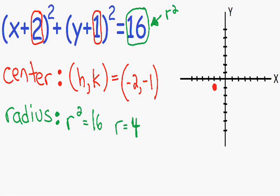The easiest points to plot are directly right, left, up, and down from the center, because you just need to count. I'll count 4 units to the right of the center — 1, 2, 3, 4 — here's one point. Then 4 units to the left — 1, 2, 3, 4 — another point. Then 4 units up — 1, 2, 3, 4 — and 4 units down — 1, 2, 3, 4. All four points are the same distance, 4 units, from the center.